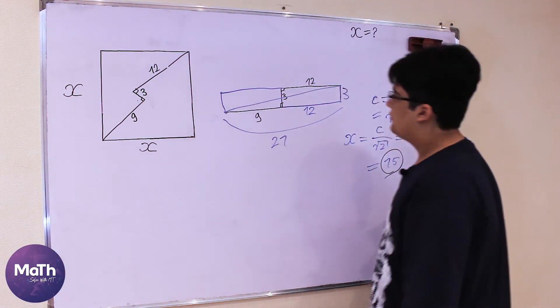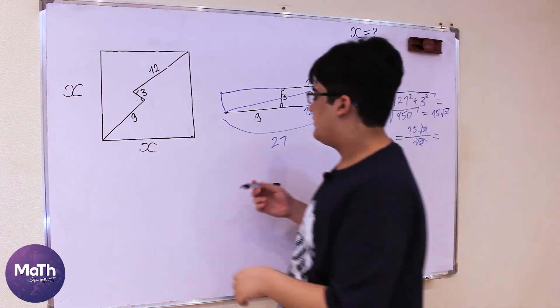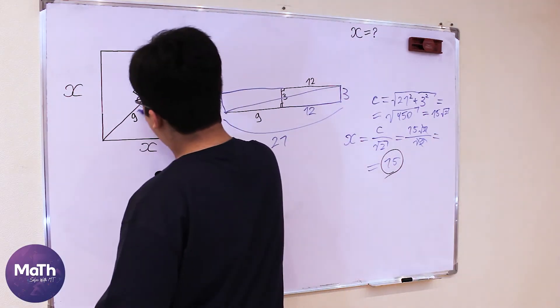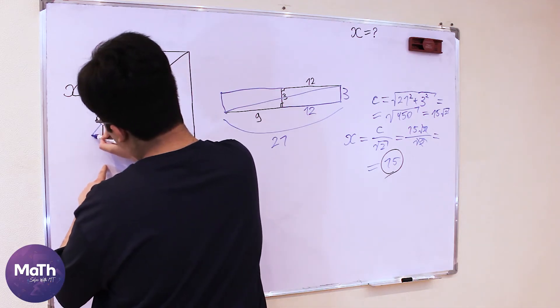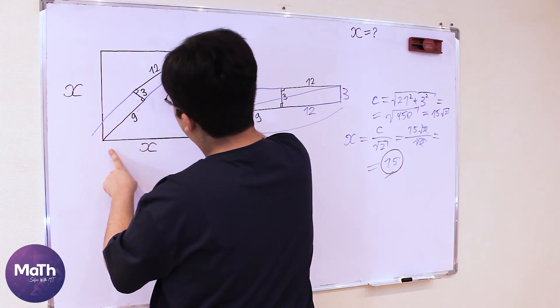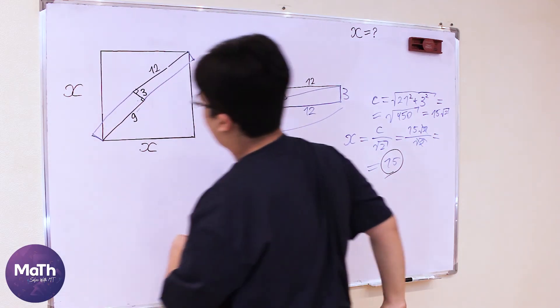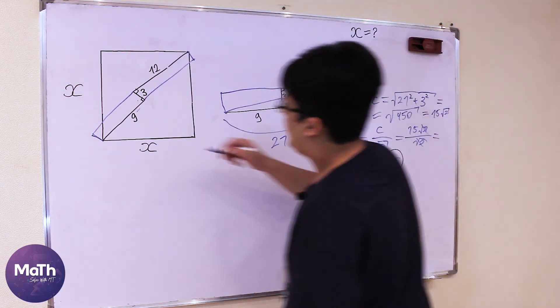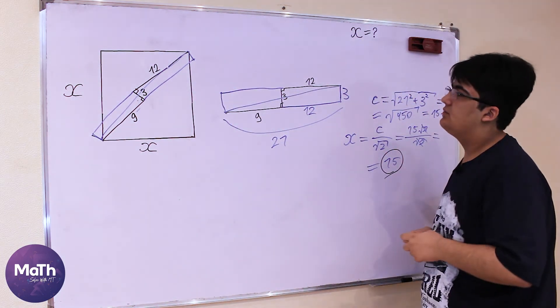Actually, we could do the same thing directly here. You see, this is 9. We would build the same rectangle, this would be 12, and this is 3, this is 3, and this is 3 as well. The hypotenuse of this right triangle will be the diagonal of the square.